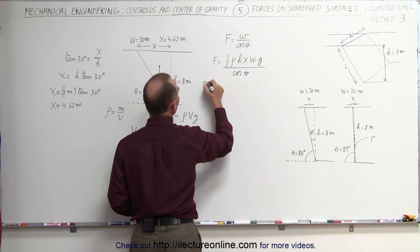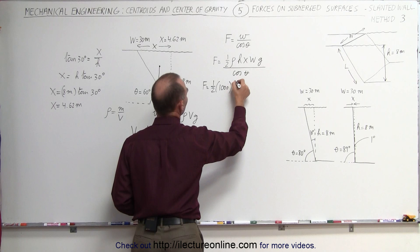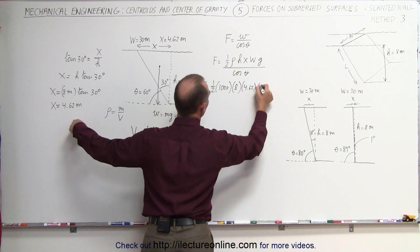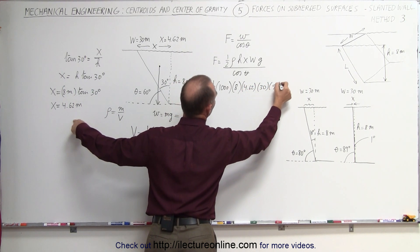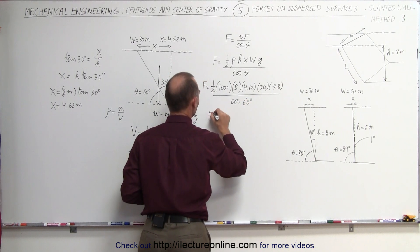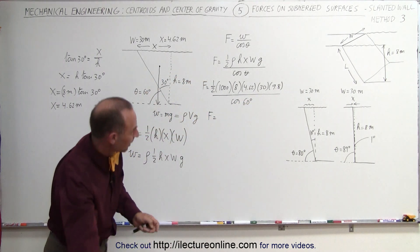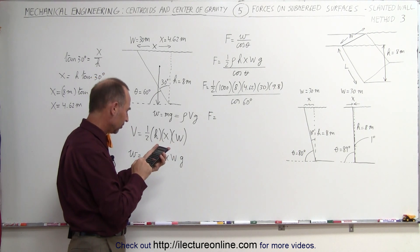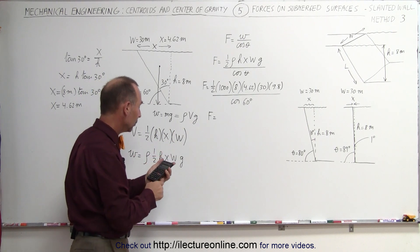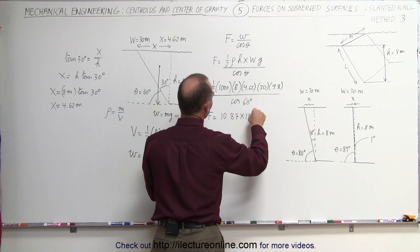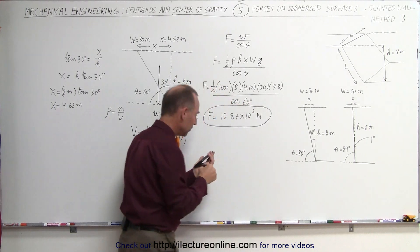Plugging in the numbers: f equals one-half times 1,000 kg/m³ times h of 8 m times x of 4.62 m times w of 30 m times g of 9.8, divided by cosine of 60 degrees. That gives 500 times 8 times 4.62 times 30 times 9.8 divided by 0.5, and we get 10.87 × 10⁶ Newtons — the same answer as in the previous videos.